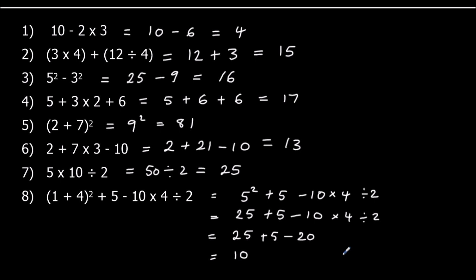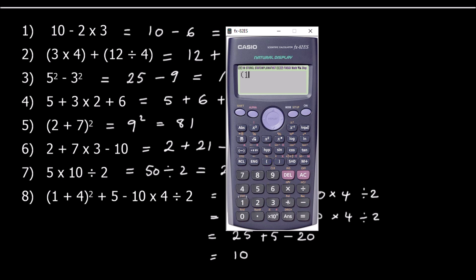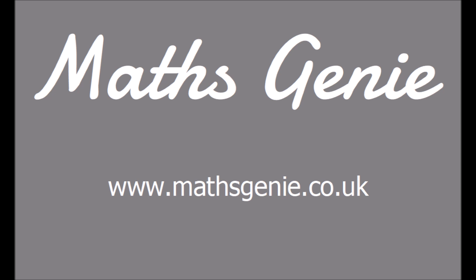So if you put any of these sums in the calculator, the calculator should do the correct order of operations and you should get the same answers. Let's check this last one in the calculator: type in (1 plus 4) squared plus 5 minus 10 times 4 divided by 2. The calculator does the correct order of operations and gets the answer of 10.